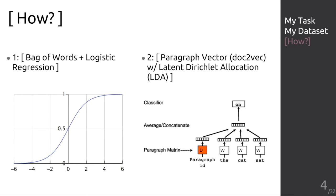I will present two approaches. The first one is bag of words plus logistic regression. The second one is paragraph vector with latent Dirichlet allocation. I will show you more later.